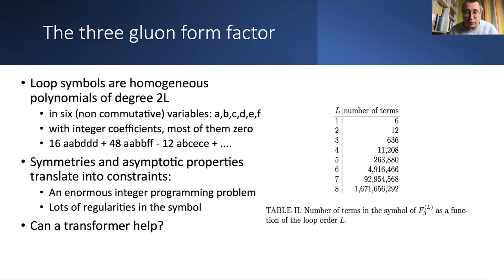Lance and Matthias developed the amplitude bootstrap, leveraging the fact that polylogarithms are difficult to compute but have many well-known algebraic properties, turning the computation into a purely algebraic problem. They can represent every loop as a symbol — technically a homogeneous polynomial in six noncommutative variables with integer coefficients. With this, they calculated things up to loop eight in N=4 super Yang-Mills planar theory, which is unheard of. The loops are homogeneous polynomials of degree 2L in six noncommutative variables A, B, C, D, E, F with integer coefficients, most being zero. At loop three you have some terms; at loop eight you have 1.6 billion terms.